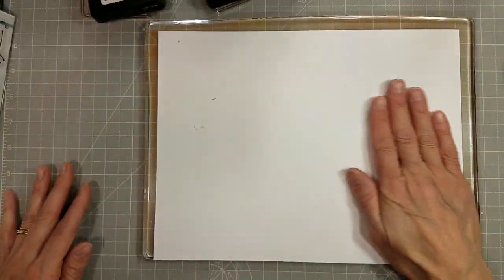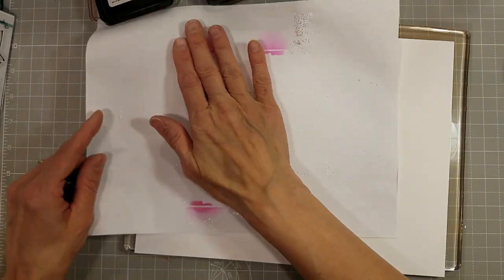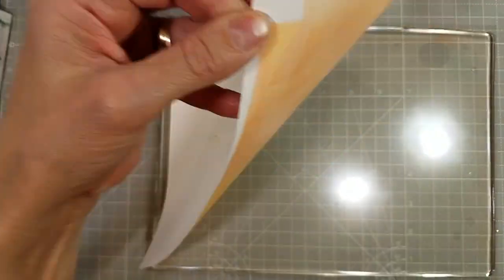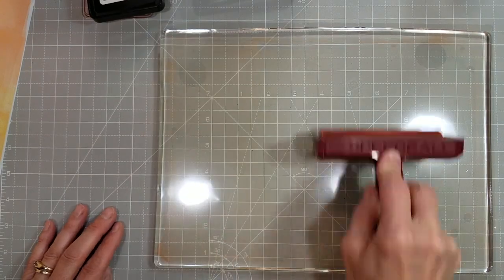I used my brayer to smooth those out a bit, and I just took a full sheet of 80-pound Neenah Solar White cardstock and pressed that down onto the gel press. That goes so quickly.